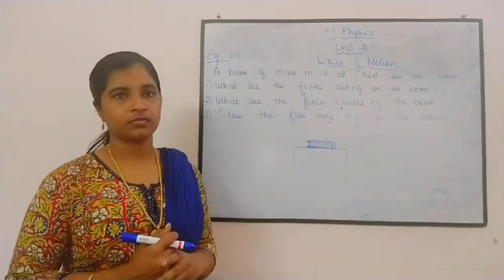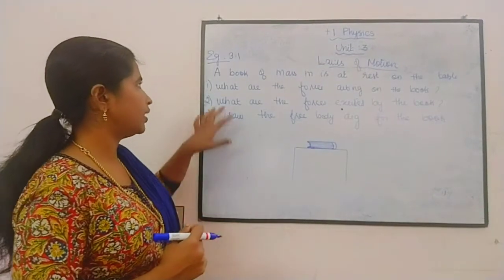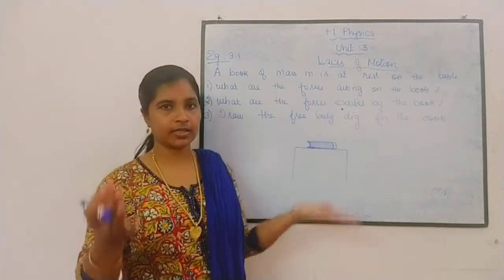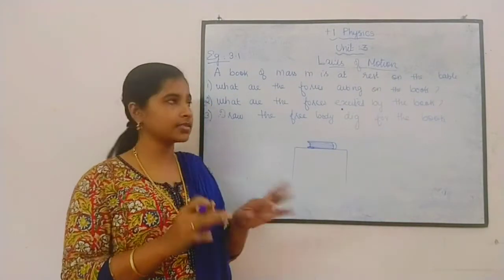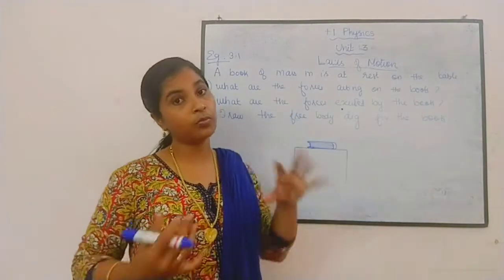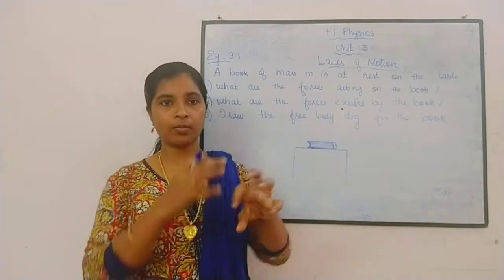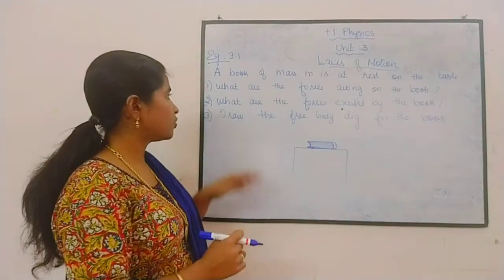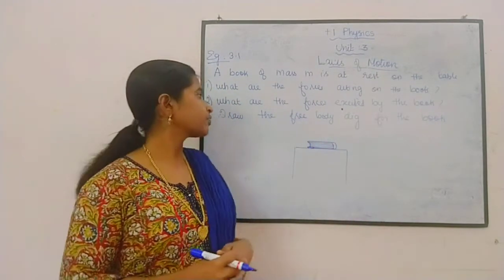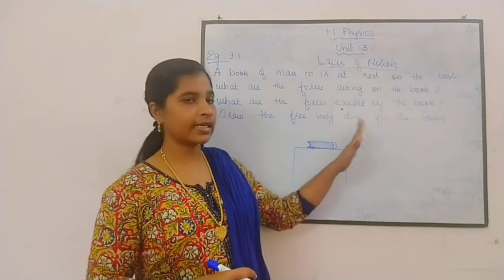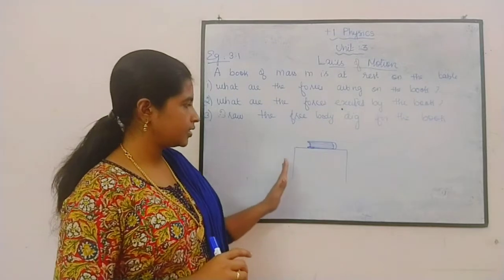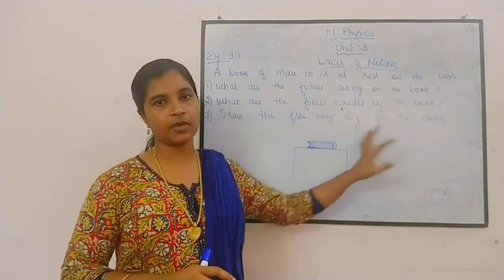Now I will give you an example. Consider this example: a book of mass M is placed on a table. The questions are: first, what are the forces acting on the book? Second, what are the forces exerted by the book? And third, draw the free body diagram for the book. So, consider this is a table and we have placed a book whose mass is M.